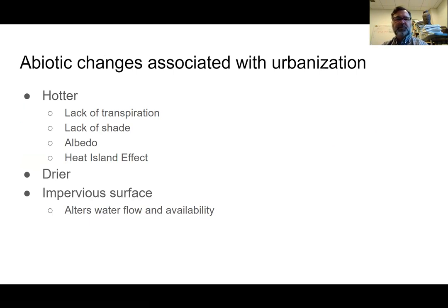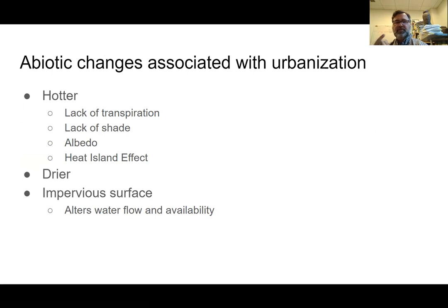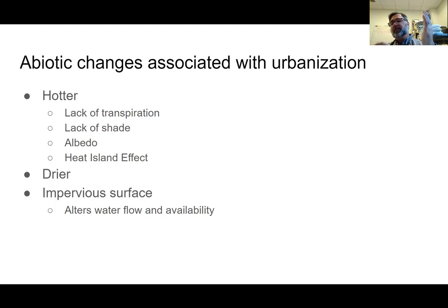Let's look at the changes associated with urbanization. Just like forest fragments, urban areas are hotter and drier. It's hotter for one reason: there's a lack of shade — no trees or fewer trees — so the sun is hitting things like pavement. There's also a lack of transpiration; trees keep it cooler through evapotranspiration, where water being converted from liquid to gas absorbs heat and cools the atmosphere. Albedo refers to what happens when a surface is struck by light: is it reflected or absorbed? Cities absorb heat because dark surfaces absorb heat compared to light ones.